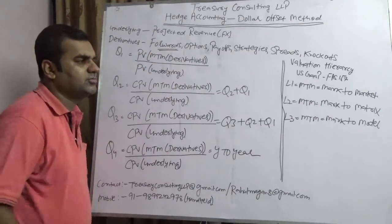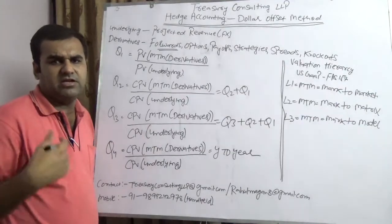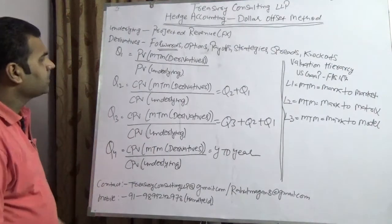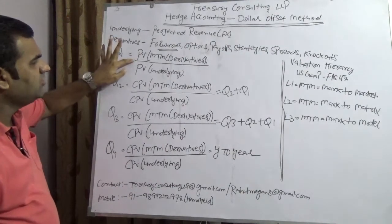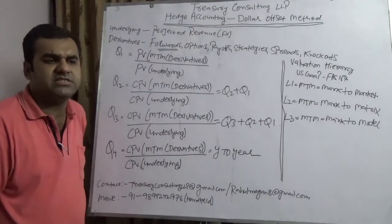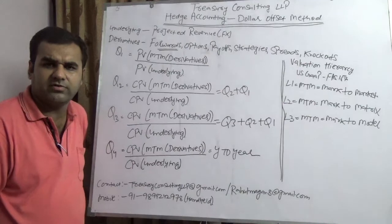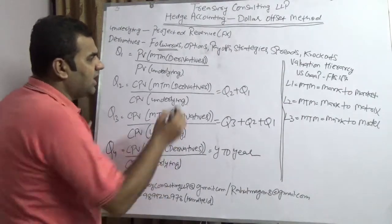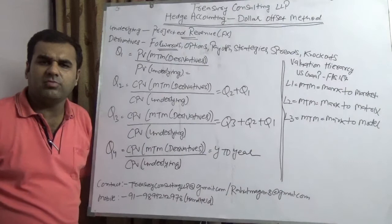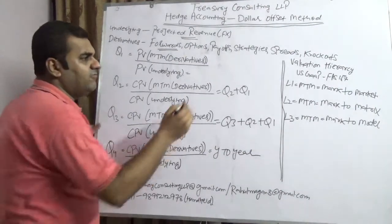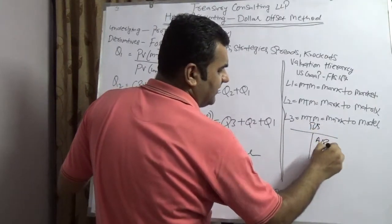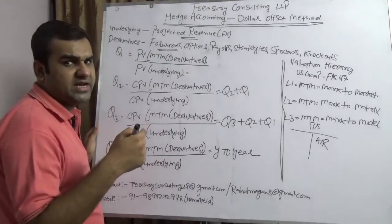Although this example is valid for options also, in options you divide it into three parts: intrinsic value, extrinsic value, and the total which is the fair value of an option contract. Now in Quarter 1, you calculate the present value of the mark-to-market of the derivative divided by the mark-to-market of the underlying. That is one of the reasons why treasurers in India do not want to do hedge accounting by the dollar offset method — they question what is meant by the underlying. The underlying is nothing but forecasted or projected revenue. But how can you calculate the mark-to-market of projected revenue?